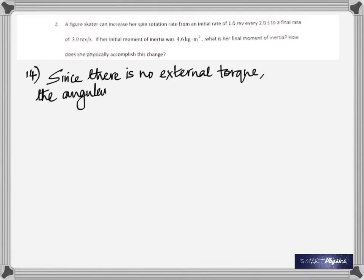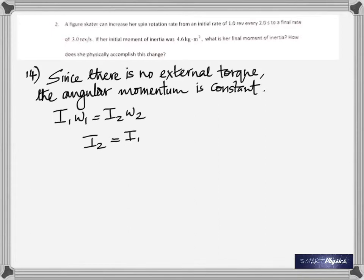I'll have to say there is no external torque acting, that's why angular momentum is conserved. Therefore I1 omega 1 equals I2 omega 2, the same thing. So I2 is I1 times omega 1 by omega 2.